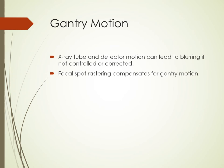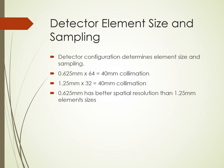Blurring caused by gantry motion can potentially reduce CT spatial resolution if not corrected. Blurring can happen because the X-ray source and detector array are moving relative to the stationary patient, both in the angular dimension and along the Z dimension during helical acquisitions. One method to compensate for gantry motion is focal spot rastering in both directions. Methods to reduce gantry motion effects are built into the scanner design and do not require user input. Smaller detector elements and oversampling methods can improve spatial resolution. Spatial resolution is better with a 64-slice configuration because of the smaller element size of 0.625 mm.